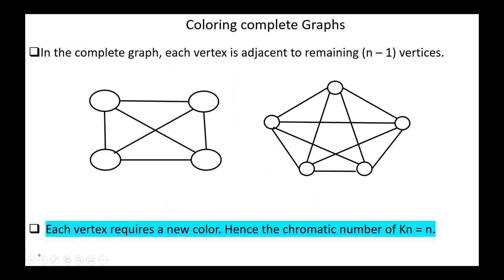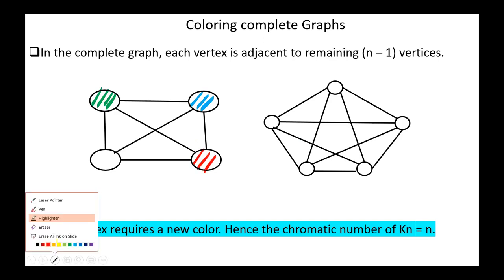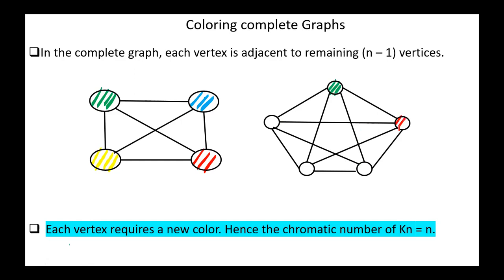Next, coloring complete graphs. In a complete graph, each vertex is adjacent to the remaining n minus one vertices, so each vertex requires a new color — green, blue, red, yellow, etc. In the K5 graph, we have to use five different colors. Hence, in the complete graph Kn, the chromatic number is n.